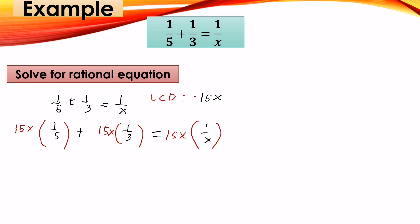15 divided by 5 is 3x, so 3x times 1 is 3x. Plus, 15 divided by 3 is 5. 5x times 1 is 5x. This equals 15, cancel, so we have 15 times 1 which is 15.